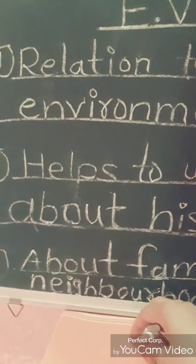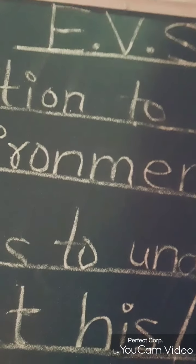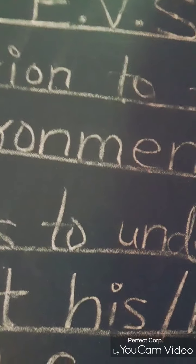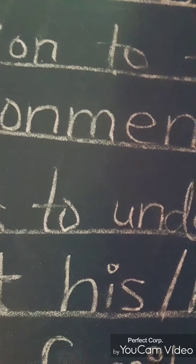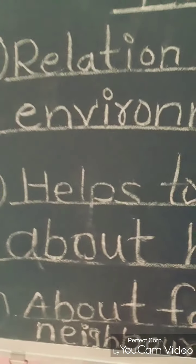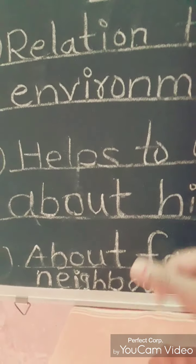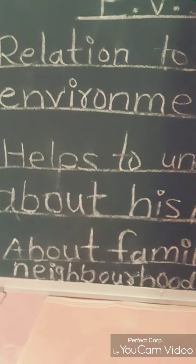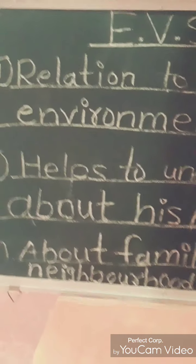About all of them, we come to know with the help of EVS. When we study EVS, first we study about our environment and the things surrounding us, and then one by one we study the remaining things. After the relation with the environment, we study about our body and different parts of the body and their uses — how they help us in our daily work. All these things we learn in the first lesson of EVS.